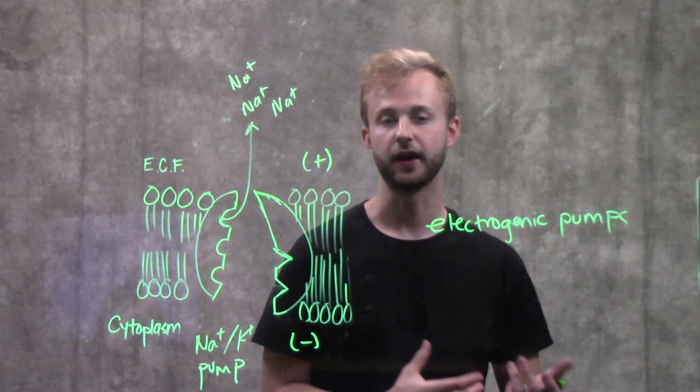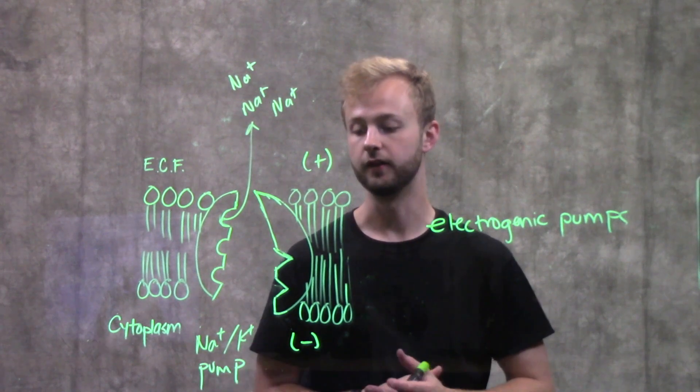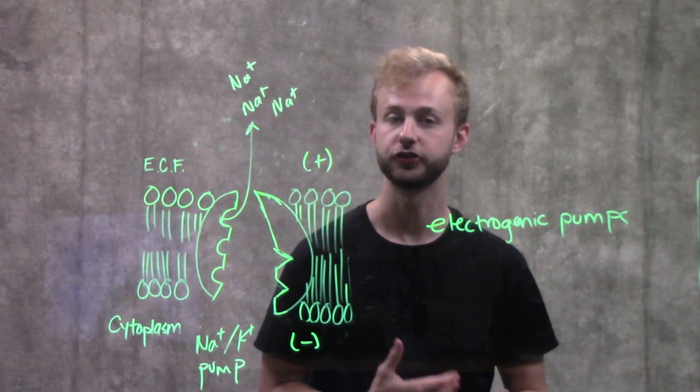In animals and plants and bacteria they use the proton pump instead of the sodium potassium pump as their main electrogenic pump.